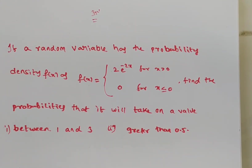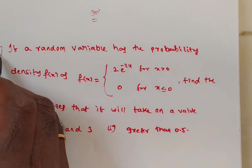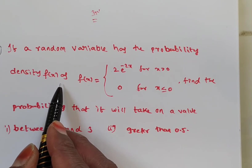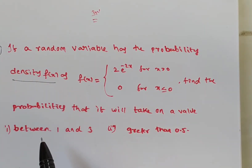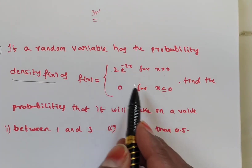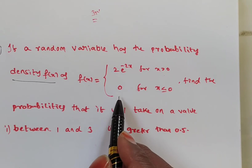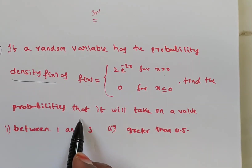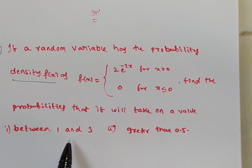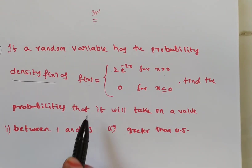We are solving a problem based on continuous random variable. The given problem is: if X is a random variable with probability density function f(x) equal to 2e to the power of minus 2x for x greater than 0, and 0 for x less than or equal to 0. Find the probability that it will take a value between 1 and 3, and second, greater than 0.5.